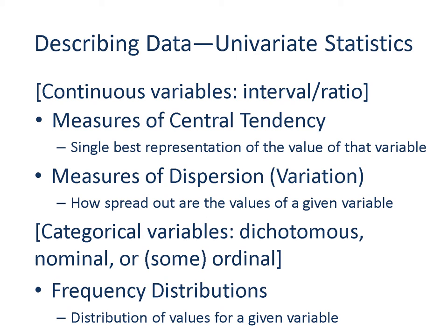If your variable of interest is either an interval or ratio variable — that is, a continuous variable — you will need to report measures of central tendency and measures of dispersion. In a quantitative study, a variable consists of different values taken by each observation. To describe the nature of this variable, you explain a single value that best represents all the values in that variable, and also how spread out the values are. On the other hand, if your variable is categorical, taking two values or a limited number of categories, you will report frequency distributions.